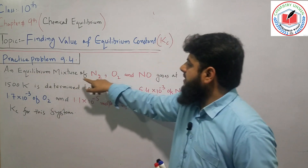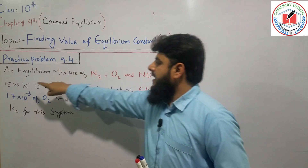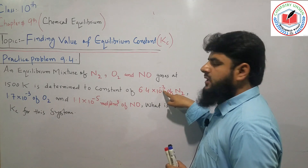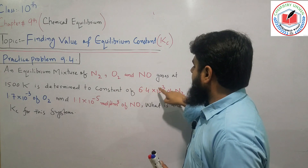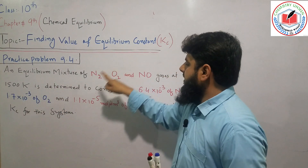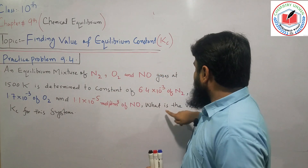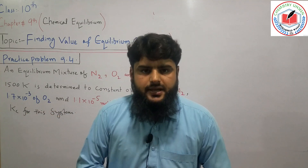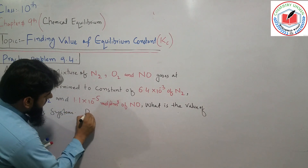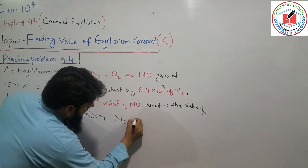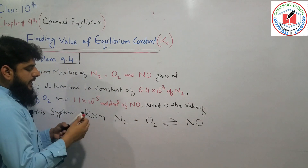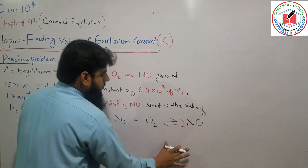There is an equilibrium mixture of nitrogen, oxygen, and nitric oxide gases at a determined constant temperature. The concentrations are given. You have nitrogen at 6.4×10⁻³ mol/dm³, oxygen at 6.4×10⁻³ mol/dm³. What is the value of Kc for this system? In this system, you have an equilibrium mixture with constant concentrations. The reaction is nitrogen plus oxygen forming nitric oxide. The balanced equation has nitrogen as N₂ and oxygen as O₂, with coefficients of 2.